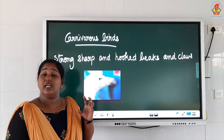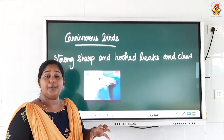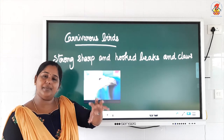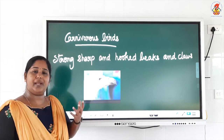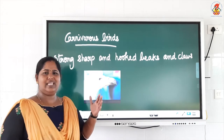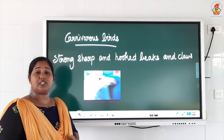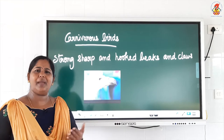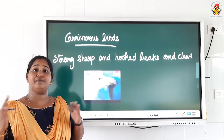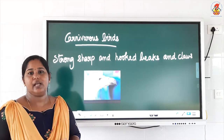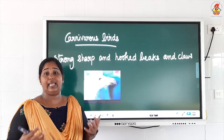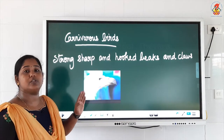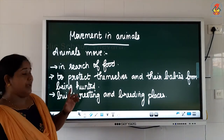Carnivorous birds have strong sharp hooked beaks — just like a hook, it catches the prey and tears the flesh. They also have sharp claws to catch the prey and kill it. With sharp claws, by the time it catches the prey, it starts bleeding and the prey is killed. These are the adaptations given to carnivorous birds in order to fetch their food. Every animal has the right to eat its food — their body parts are adapted so they can get their food faster.